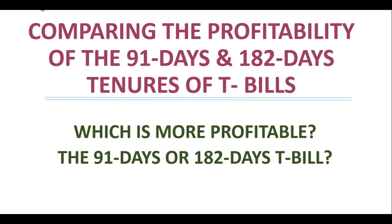Sometimes you are looking at the duration — maybe you want your money back within the shortest possible time. Sometimes you are looking at profitability. If you are looking at which tenure will yield the highest profit within a given time, you need to know what is involved and choose wisely. We are going to look at the profitability of the 91 days versus the 182 days. The question is: which is more profitable — the 91-day or the 182-day T-bill?